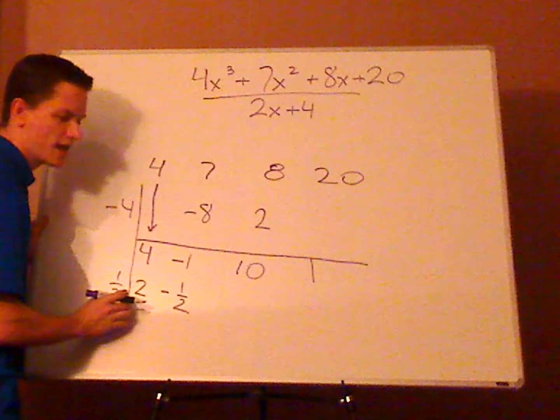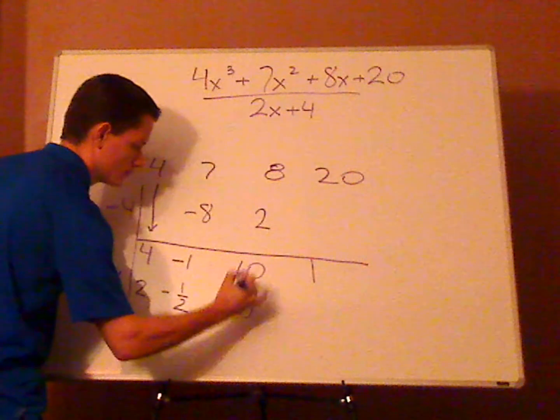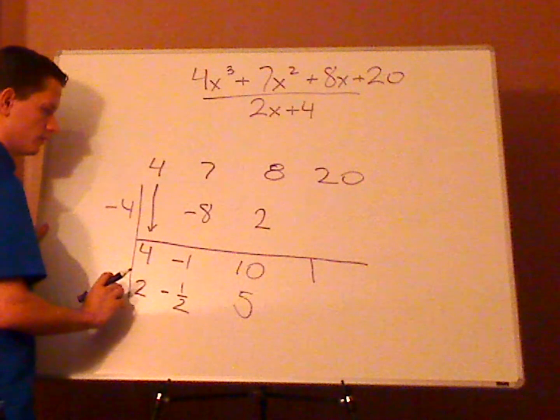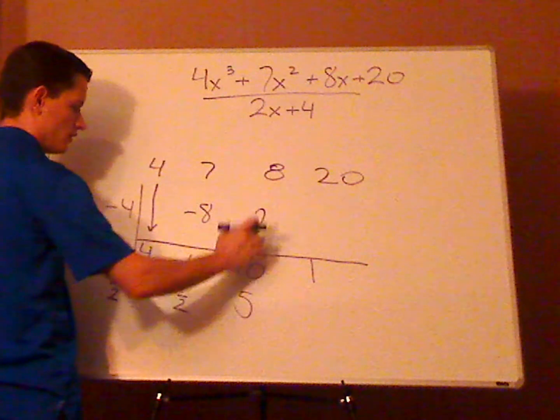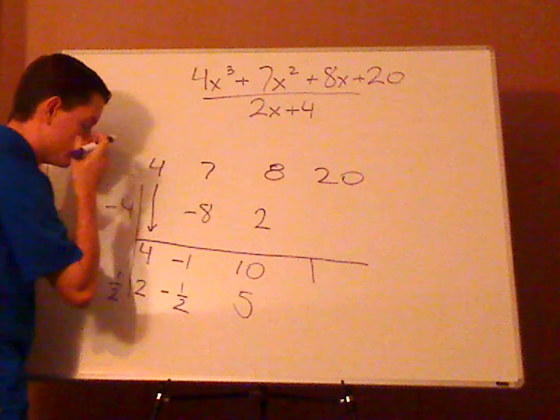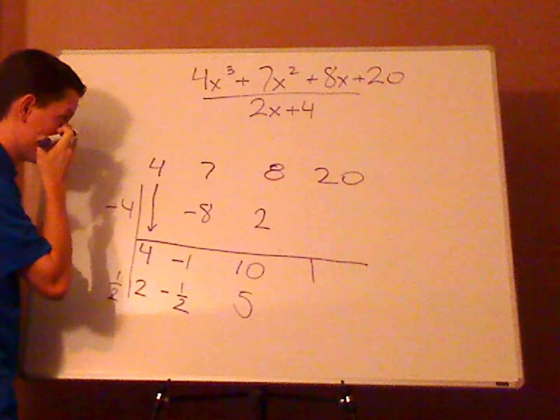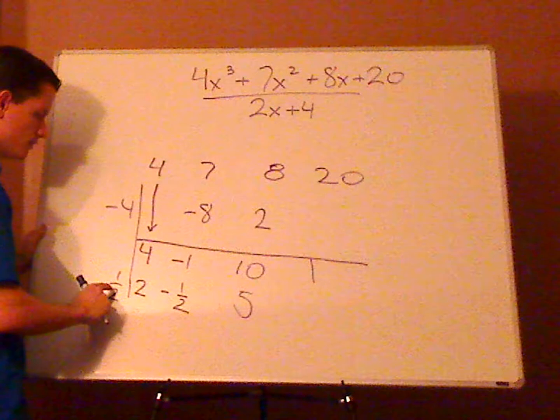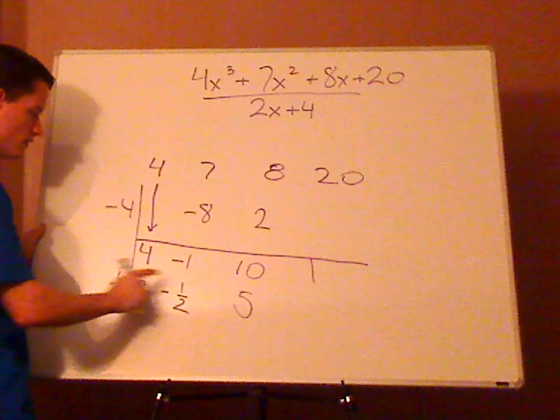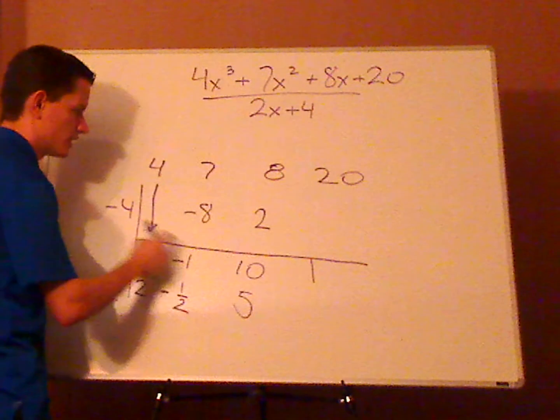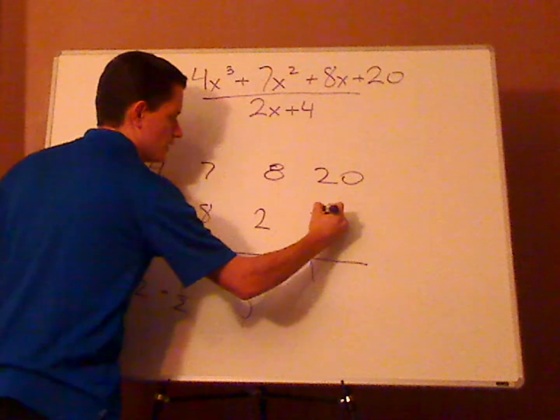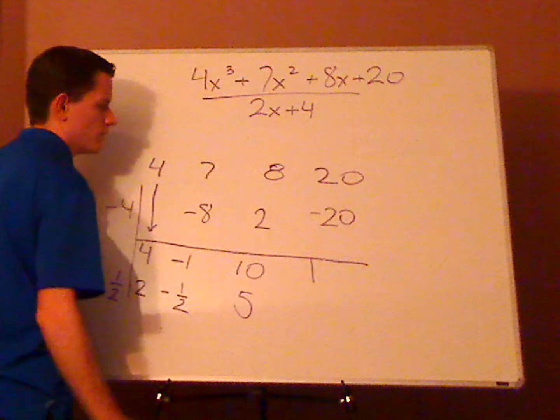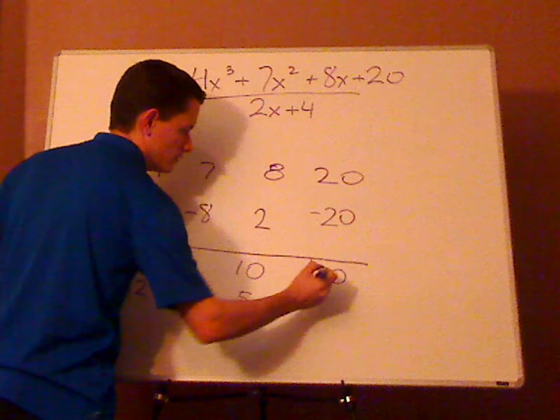Multiply that by 1 half. Now, that and that. Now, you're going to have a remainder. So, take this and multiply it to this. So, 5 times a negative 4 is negative 20. So, 20 minus 20 is 0.